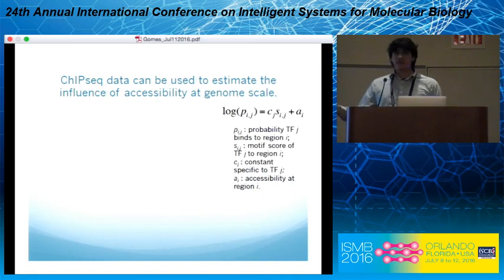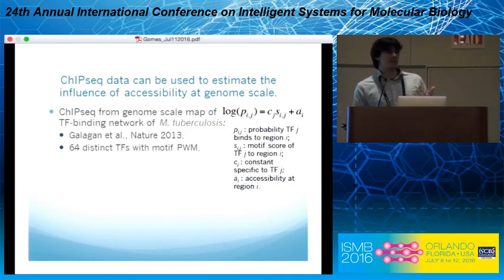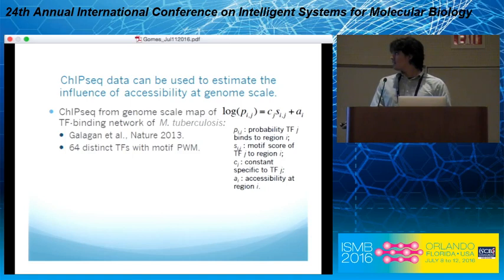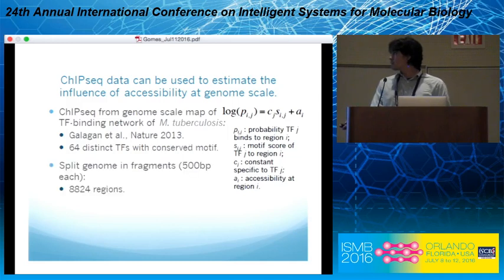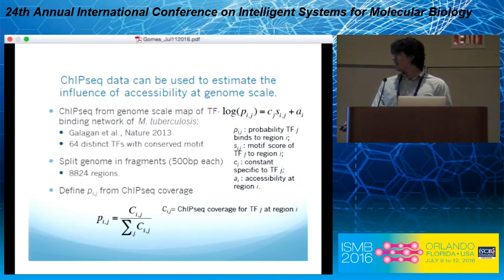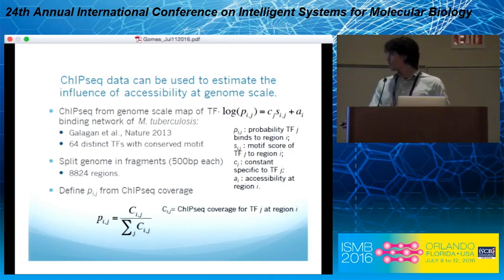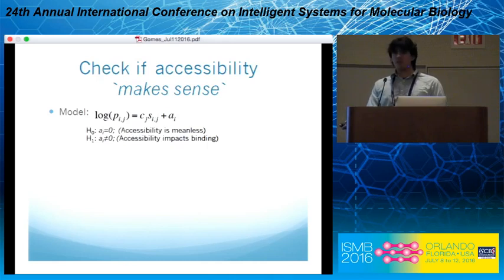With the equation and the proper model, we need data to validate if it makes sense. We validated this using a dataset published in 2013 that maps the regulatory network of tuberculosis. It has 64 transcription factors that found a binding motif with a PWM. The genome is split into fragments of 500 base pairs. The probability of binding at each region is obtained by normalizing the ChIP-seq coverage at each region per experiment condition. Now that we have the model and the data, we can test and validate and see if it works.